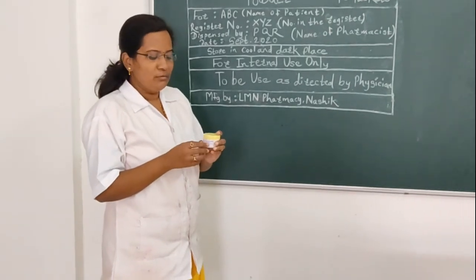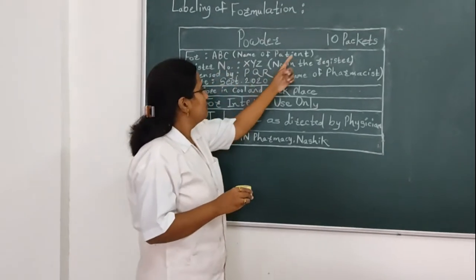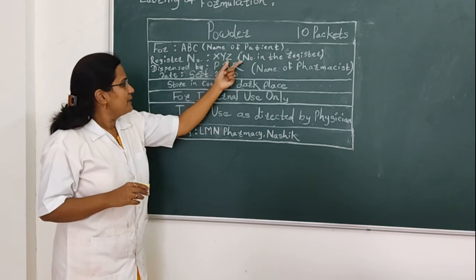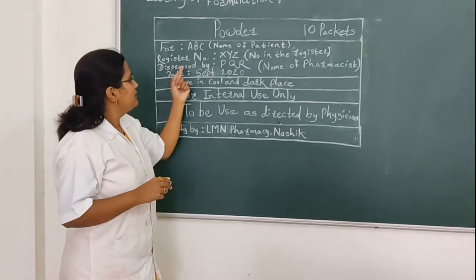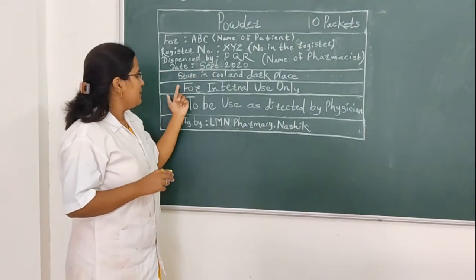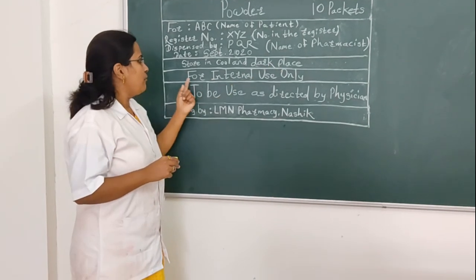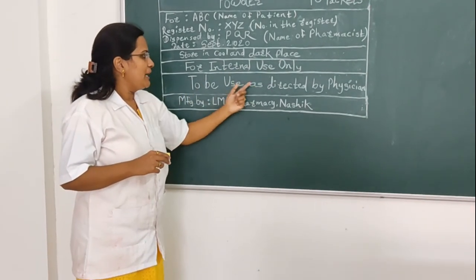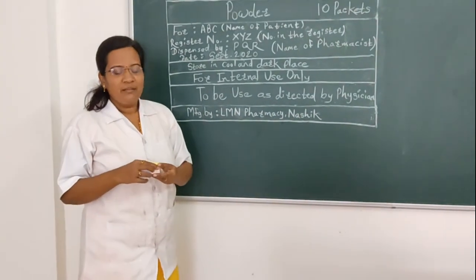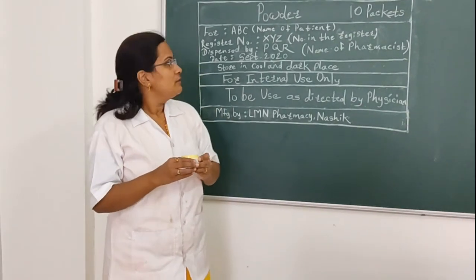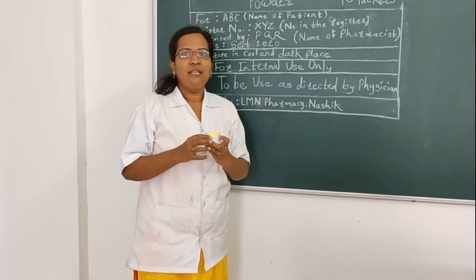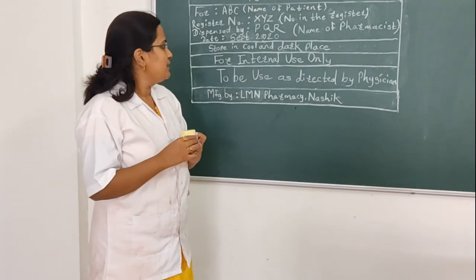Labelling of the formulation powder containing 10 packets: patient name ABC, register number XYZ, address as given in the register, dispensed by PQR (name of pharmacist), manufactured in 2020, for internal use only to be used as directed by physician, manufactured by Element Pharmacy. The 10 packets of this powder are submitted in a wide-mouth container. The instruction on the label reads: for internal use only.